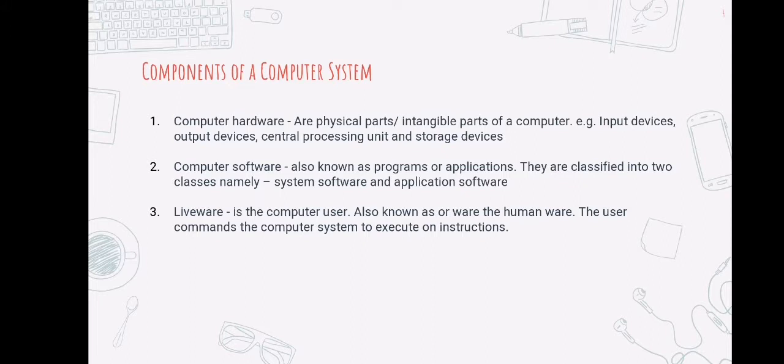So what are the components of a computer system? As mentioned earlier, a computer system has two primary components. First is the computer hardware. The computer hardware are the tangible parts of the computer system. They are classified into four types: the input device like the mouse and the keyboard, the output device like the printer and the monitor, and the processing device which is our CPU or central processing unit.